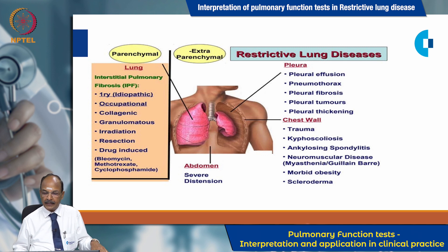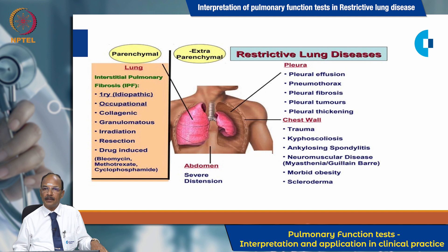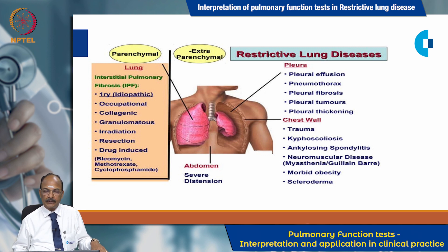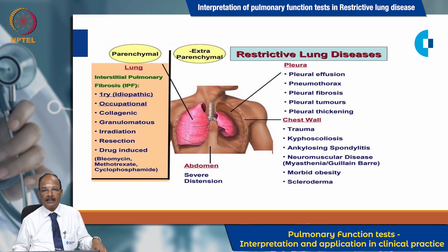Extra-pulmonary causes can be classified under pleural, chest wall, or abdominal causes. Pleural causes include pleural effusion, pneumothorax, pleural fibrosis, pleural tumours, and pleural thickening. Chest wall-based causes include trauma, congenital chest wall abnormalities like kyphoscoliosis, ankylosing spondylitis, neuromuscular diseases like myasthenia or Guillain-Barré, and morbid obesity. Abdominal causes include any condition causing increased abdominal width and upward displacement of the diaphragm, such as massive ascites or abdominal distension.